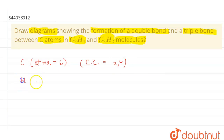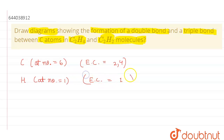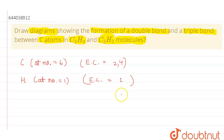In hydrogen, the atomic number is 1 and its electronic configuration is also 1. Hydrogen needs one more electron to complete its duplet, and carbon needs four more electrons to complete its octet. So hydrogen has one valence electron and can make one bond.